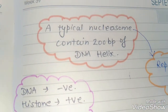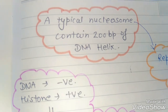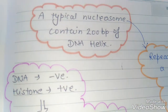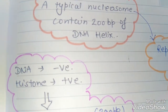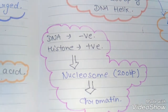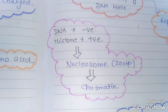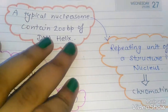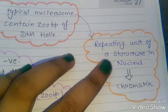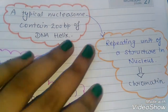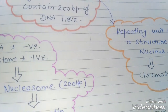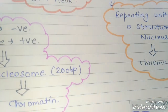A typical nucleosome contains 200 base pairs of DNA helix. The nucleosome is the repeating unit of chromatin structure in the nucleus. Nucleosomes repeat to form the higher-order structure of chromatin.